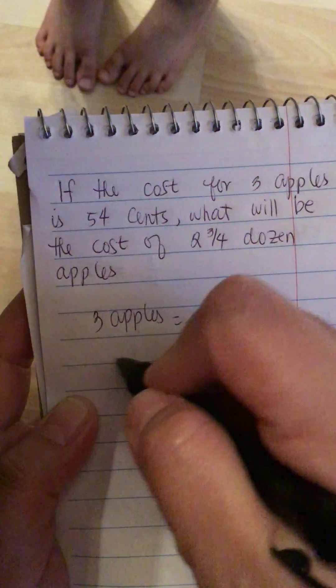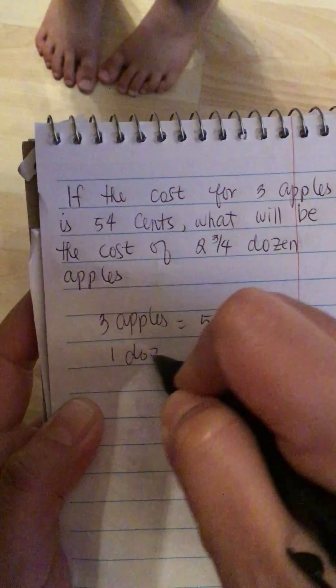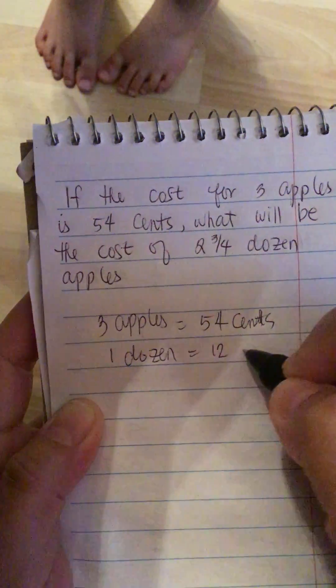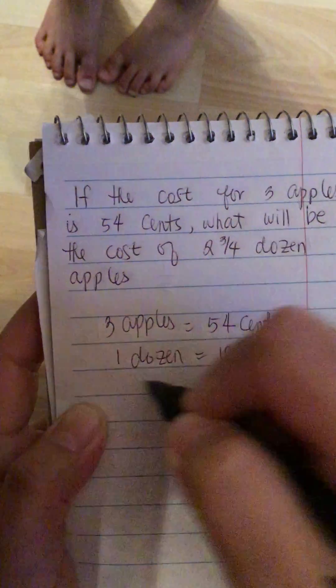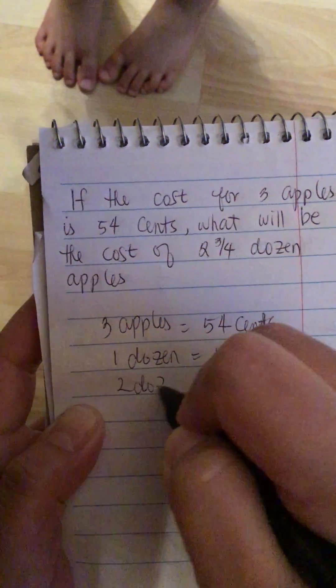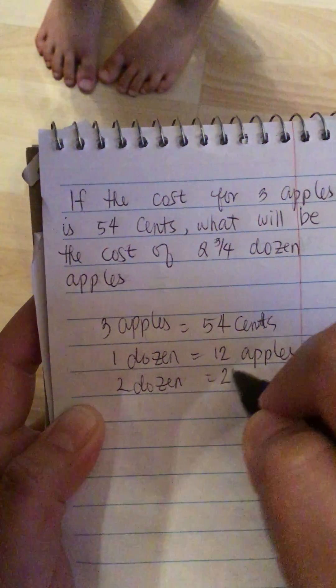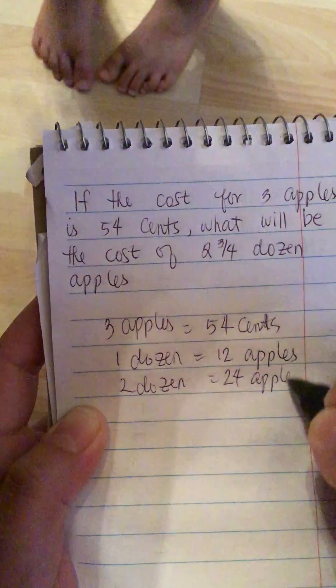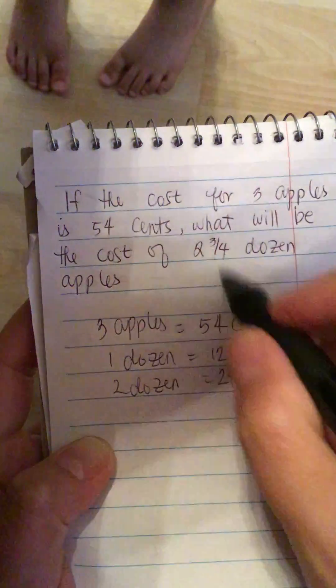So one dozen is equal to 12 apples. That means that two dozen is equal to 24 apples, plus three-fourth of a dozen. Three-fourth dozen is equal to nine.